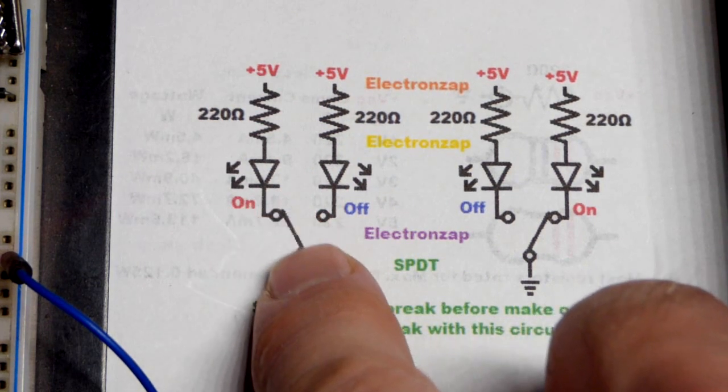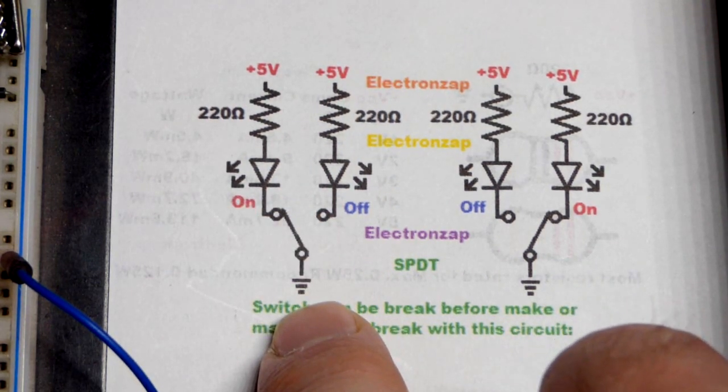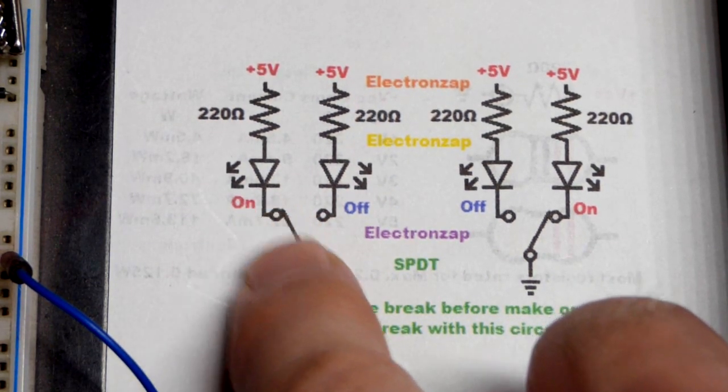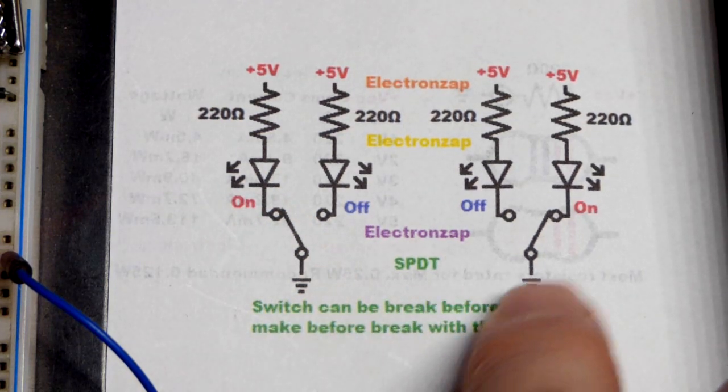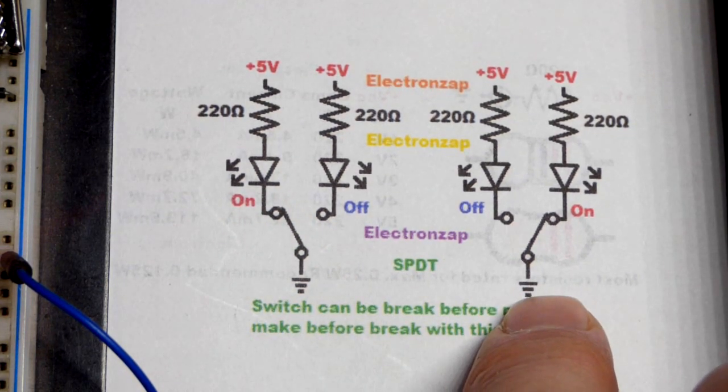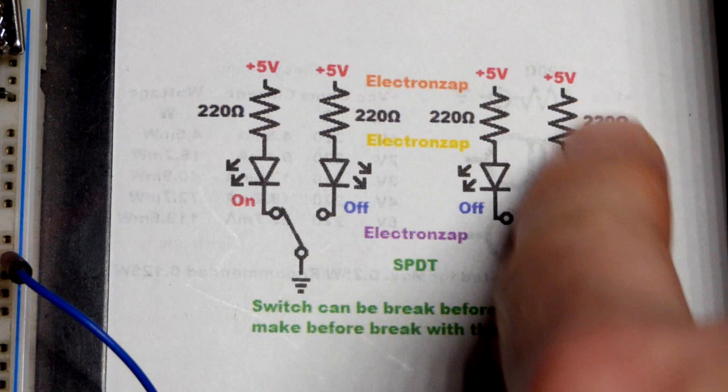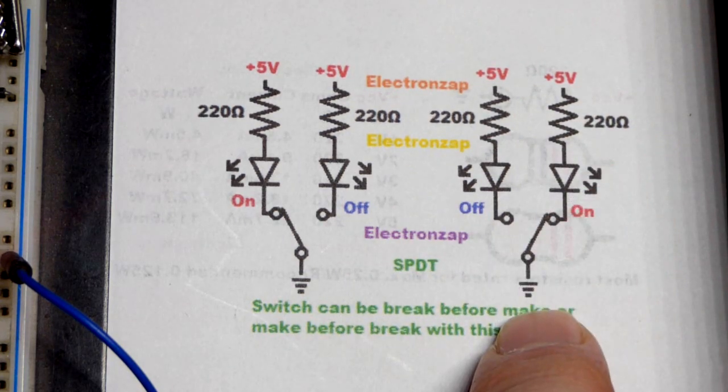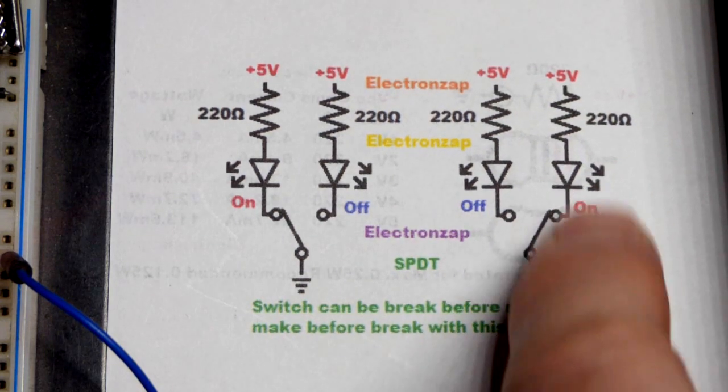So in this case that LED will be on because we have a current path there from the positive supply to ground when the switch is closed in that position. Whereas we have the other position here, we switch that, now that LED will turn on when the switch is in that position when it's closed. It's open to the other side.